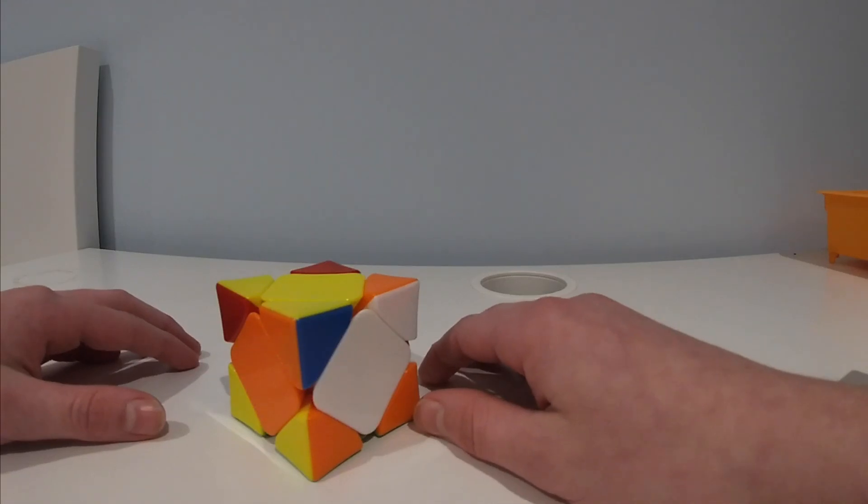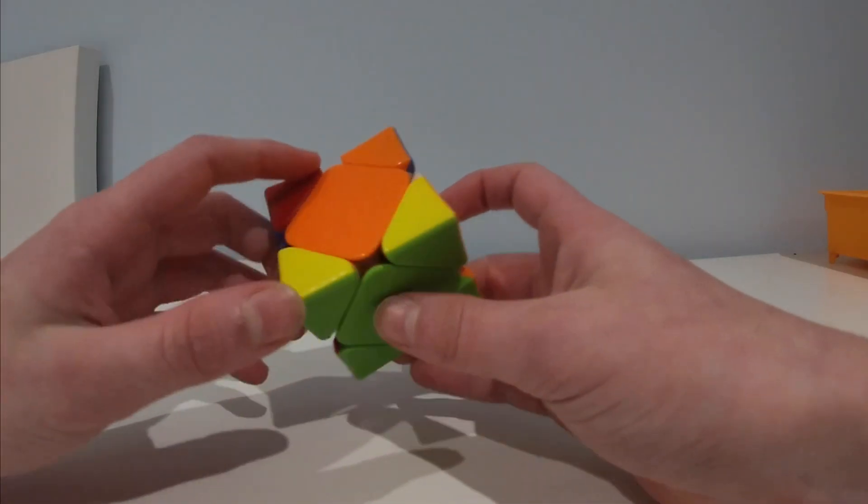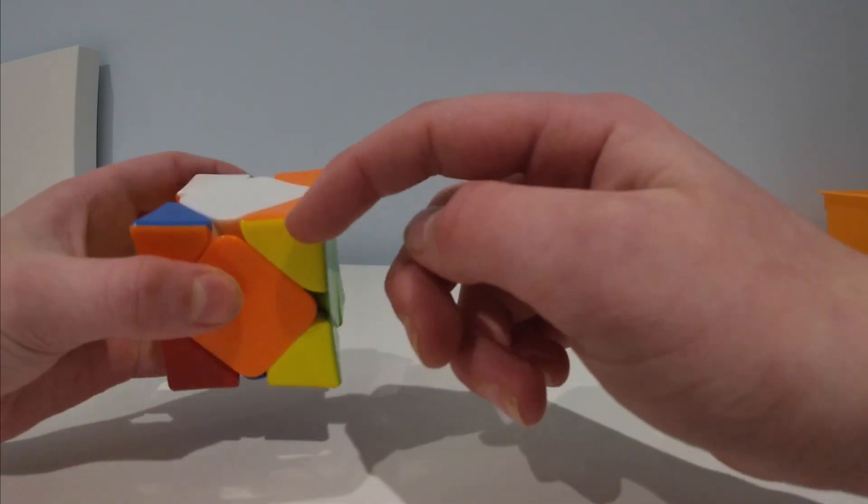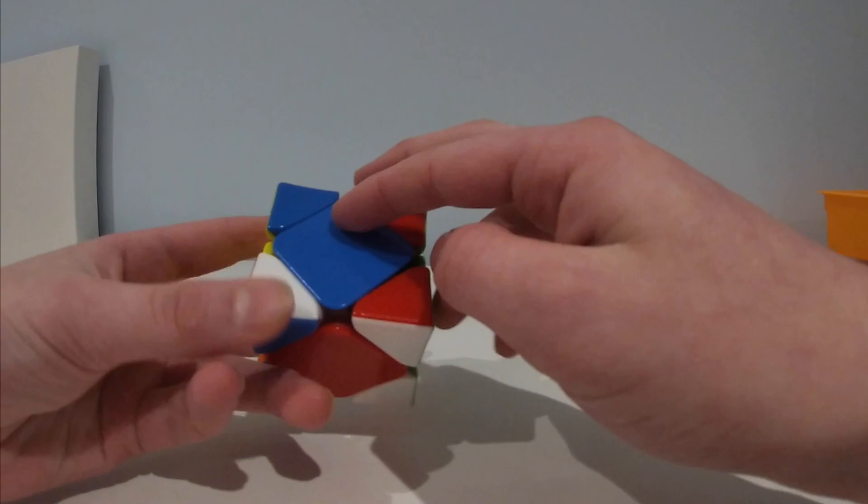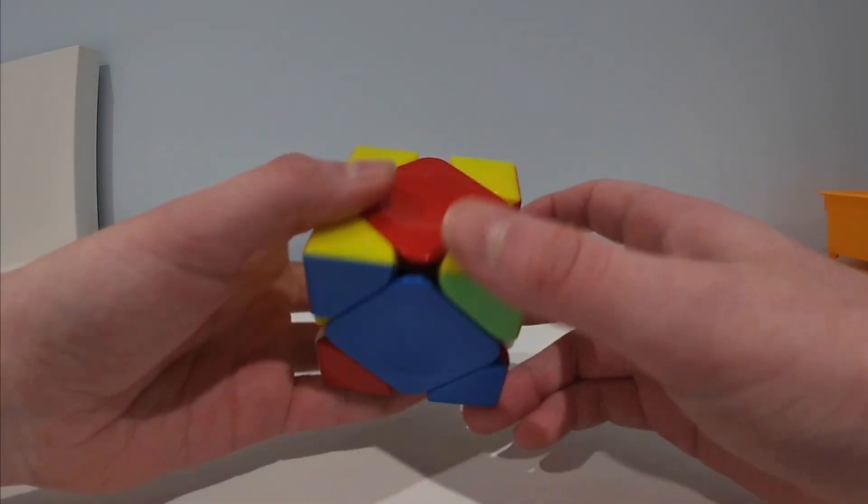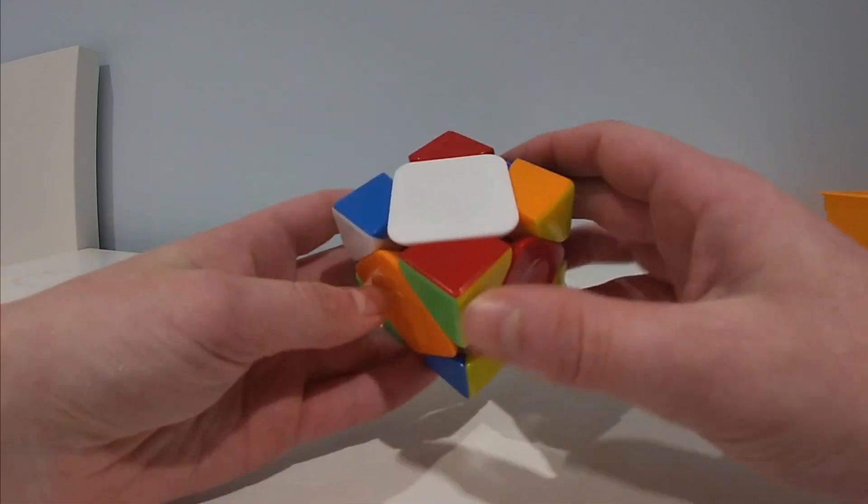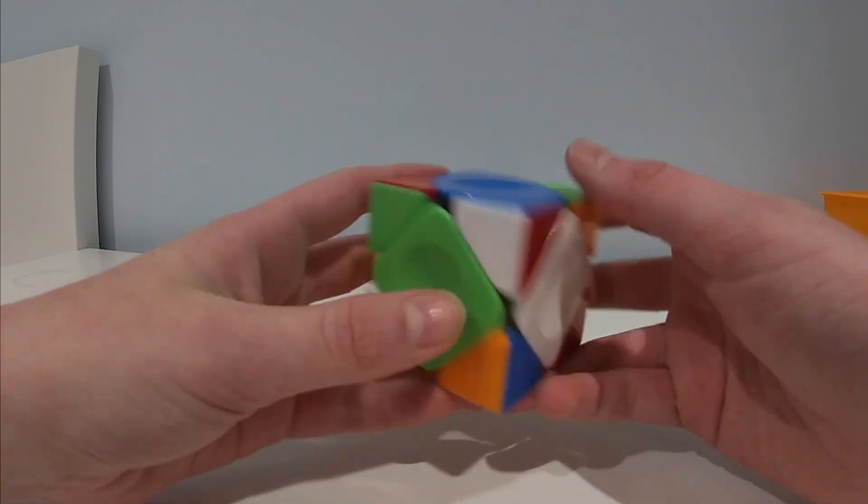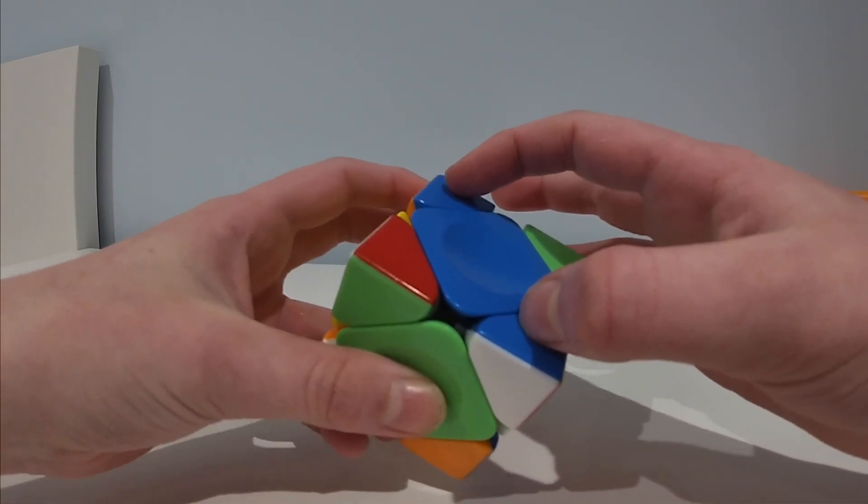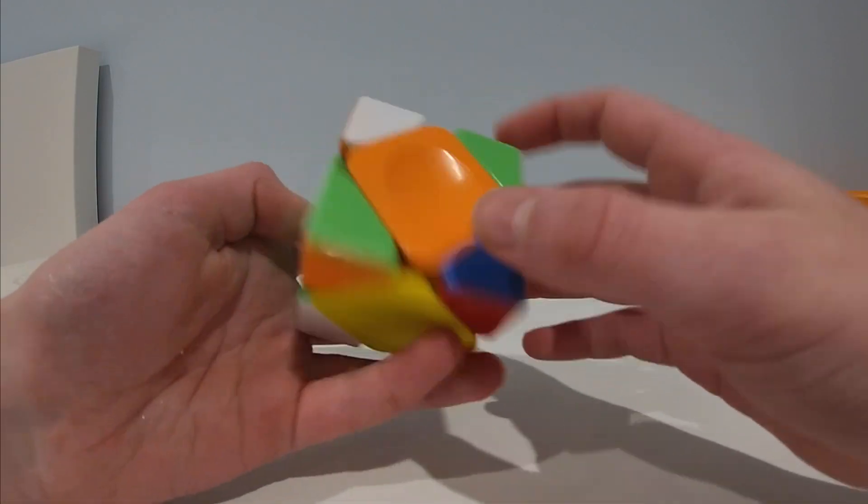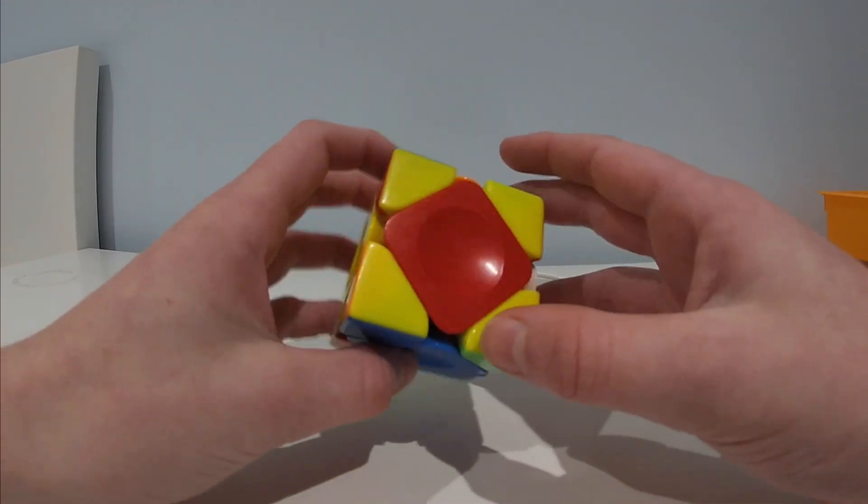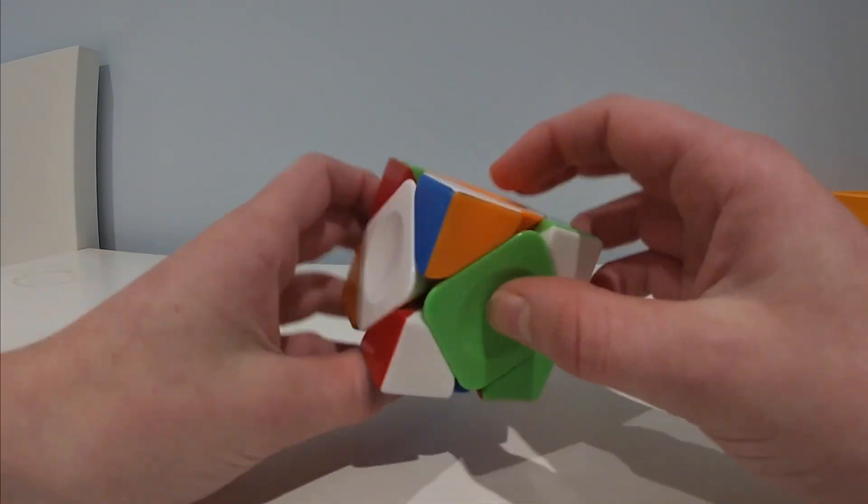The first step of solving the Skewb is solving a layer. This is basically a side but you've got to make sure the corners match up together. The first step you want to do is look to see which side is the best. Blue here has two corners already in the correct place which is better than all the others. Green being the next best with one corner in place. In this situation we would do blue.